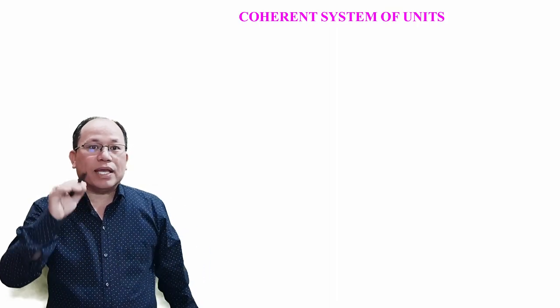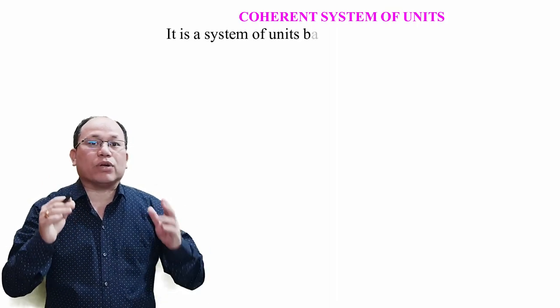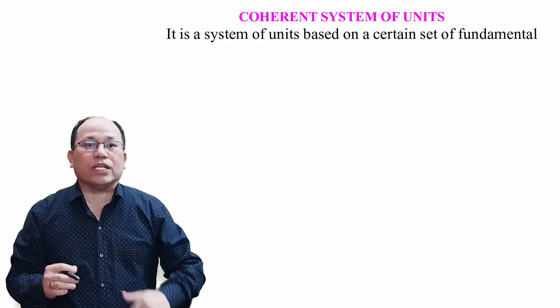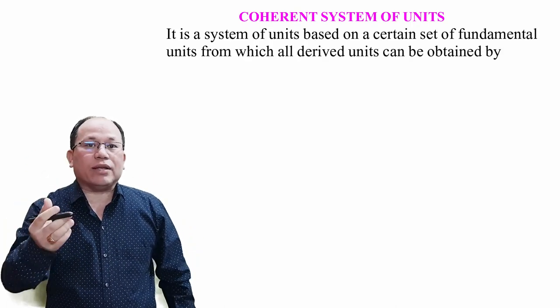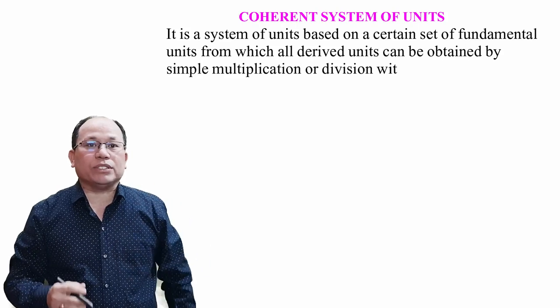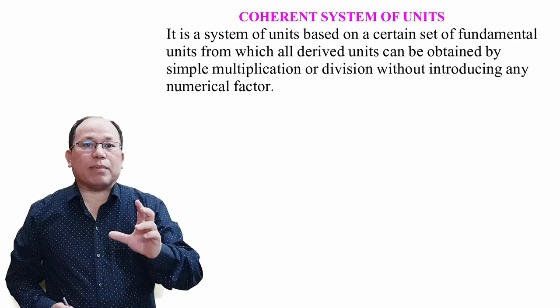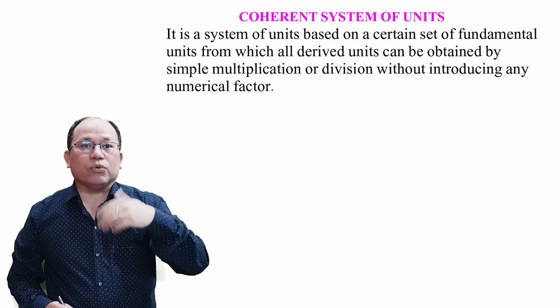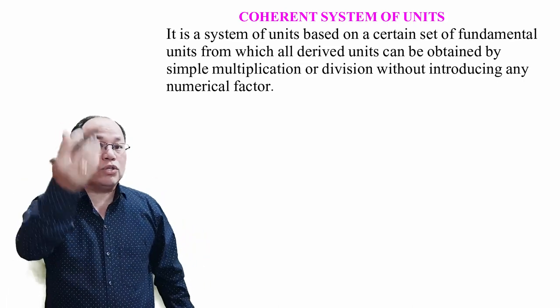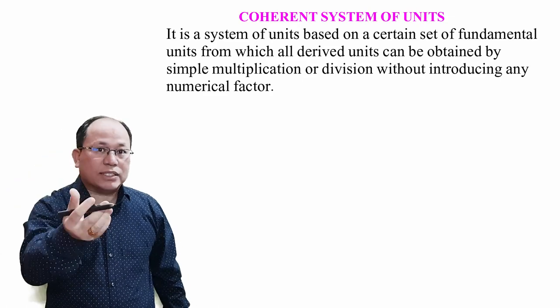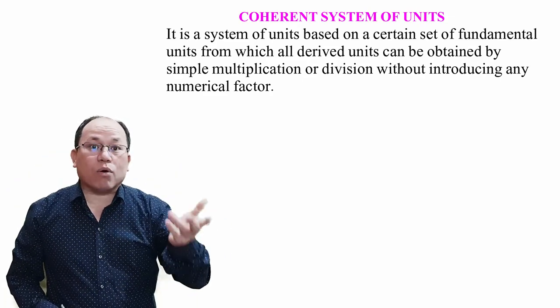Let us discuss with a few examples. Coherent system - it is a system of units based on a certain set of fundamental units from which all derived units can be obtained by simple multiplication or division without introducing any numerical factor. Means coherent system essentially, the fundamental units can be used by multiplying or by dividing.